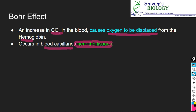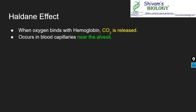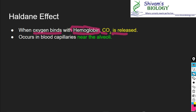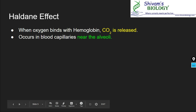Now we will move to the Haldane effect. The Haldane effect describes what happens when oxygen binds with hemoglobin — it occurs near the alveolus. When oxygen binds with hemoglobin, carbon dioxide is released. Near the alveolus, when we take in oxygen, hemoglobin attaches with oxygen to form oxyhemoglobin, and due to this CO2 is released. This is known as the Haldane effect and it occurs in blood capillaries near the alveoli.